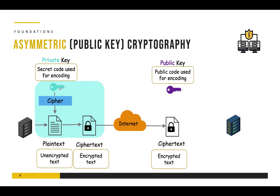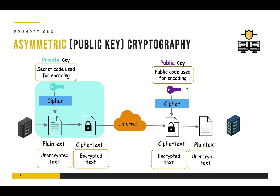In symmetric encryption we used the same key for encryption as well as decryption, but in asymmetric encryption we use a private key for encryption and a public key for decryption. When we apply the public key we get back the plain text, completing the decryption process. The reason different keys can work is that there are special mathematical operations which allow different keys to be used for encryption and decryption.